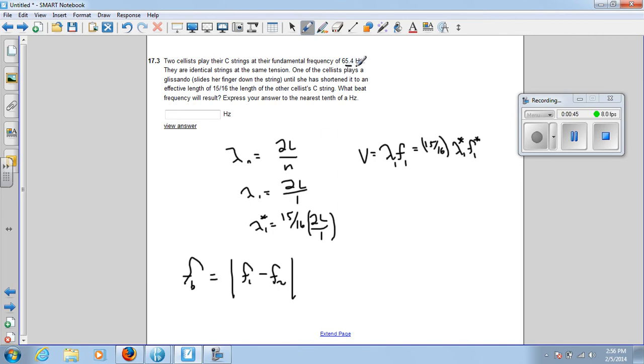The question is, alright, we have one frequency, then this person, this cellist, uses 15 sixteenths the length of the string. So what will be the frequency we hear when she makes the wavelength that much smaller? For strings tied on both ends,